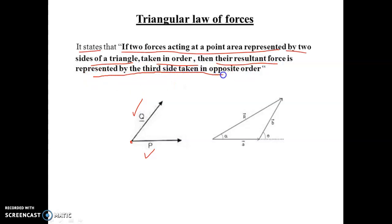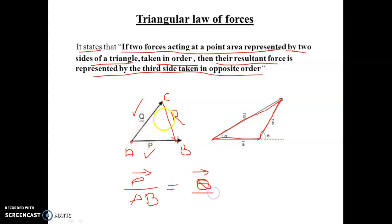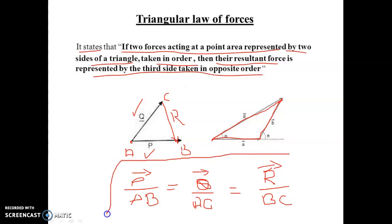For the triangular law of forces: if two sides of a triangle represent two forces, the resultant is represented by the third side taken in the opposite direction. If we consider side A, side B, and connecting the third side, that third side becomes the resultant. The formula is: vector P divided by side AB equals vector Q divided by AC equals resultant R divided by BC.